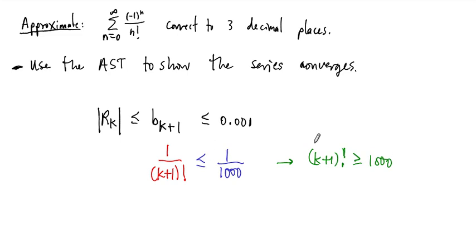We have to find - and by the way, we don't want to choose k to be too big, there's lots of k that satisfy this - we want to find the smallest k for which this is true. So the smallest k for which (k+1)! is greater than or equal to 1000.